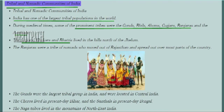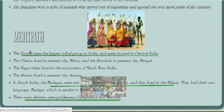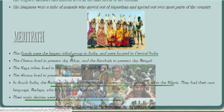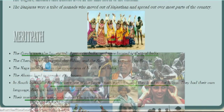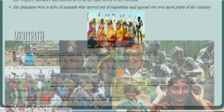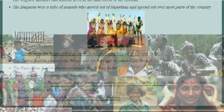The Gond tribes were the largest tribal group in India, located in central India. They were forest people who lived in present-day Bihar. Santhal tribes lived in Bengal, Naga tribes lived in northeast India, and Ahom tribes lived in Assam. In south India, the Badagas were the largest native tribal people, living in the Nilgiri mountain areas. Their native language was Badaga, somewhat similar to Kannada, and the goddesses they worshipped were Gangamma and Hitte.